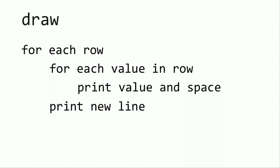So draw will have nested for loops, something like this. For each row, and then for each value in the row, you're going to print the value in the space. Once you've printed all the values in the row, then you can print a new line. Remember that the order for your draw function must echo or mirror the order in your initialized function.